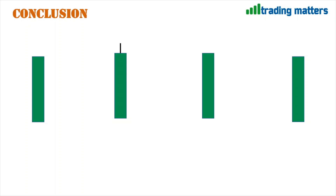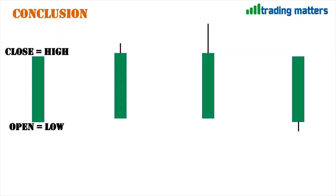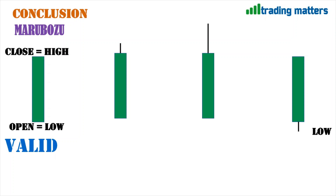Let's look at four different kinds of candlesticks. The first case has open equal to low and close equal to high, following the standard Marubozu definition — placing a trade on this is valid. The second case has a smaller upper wick. The third case has a longer upper wick. Even if close equals high, if the candle has a lower wick, we will avoid trading that Marubozu.